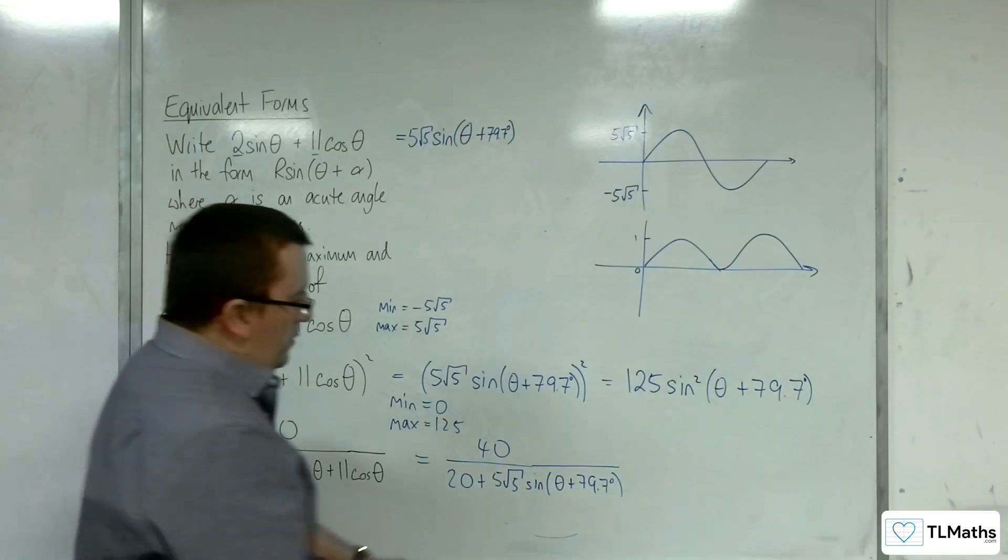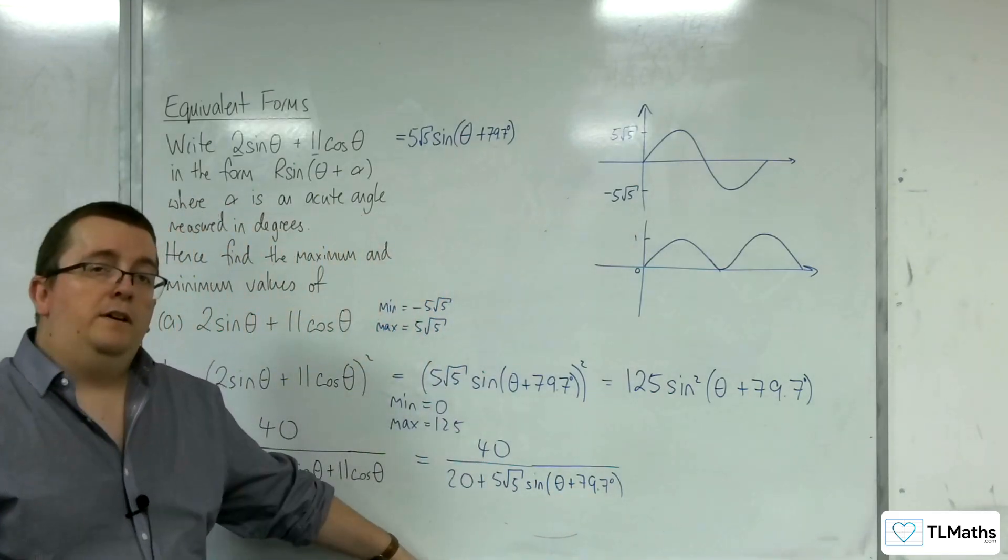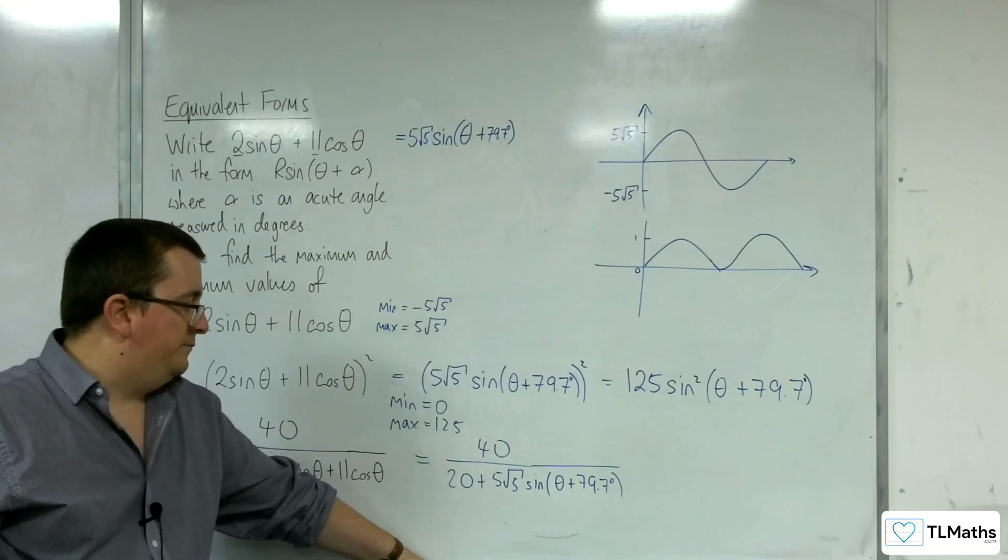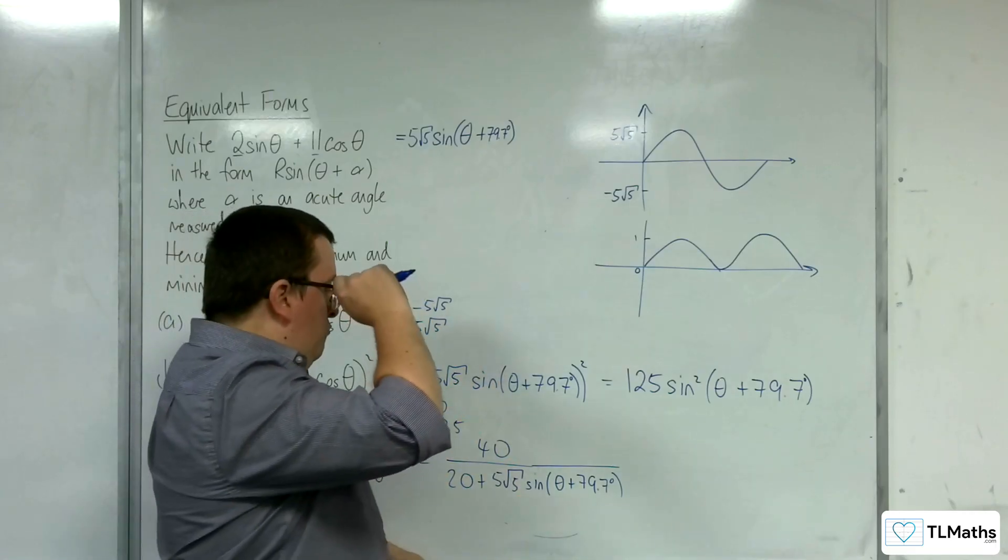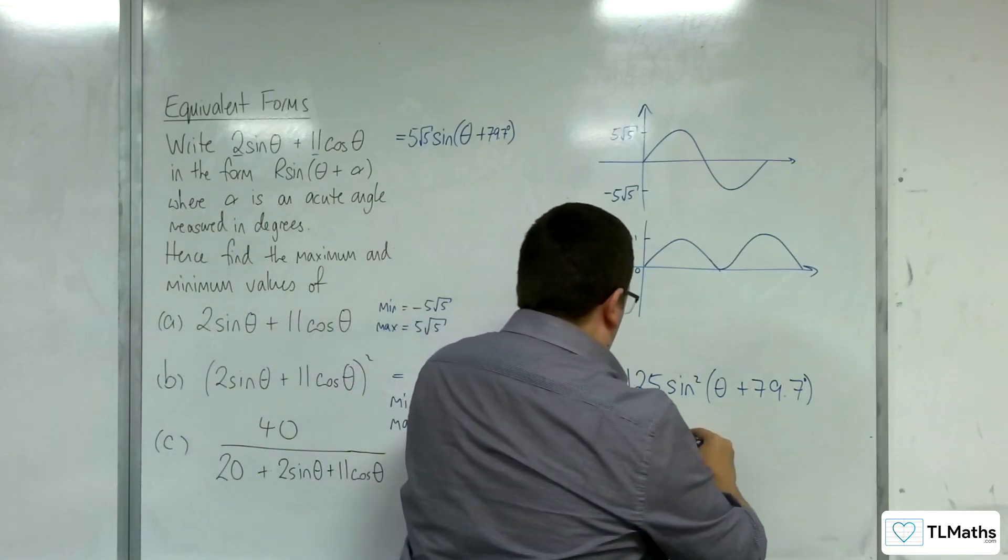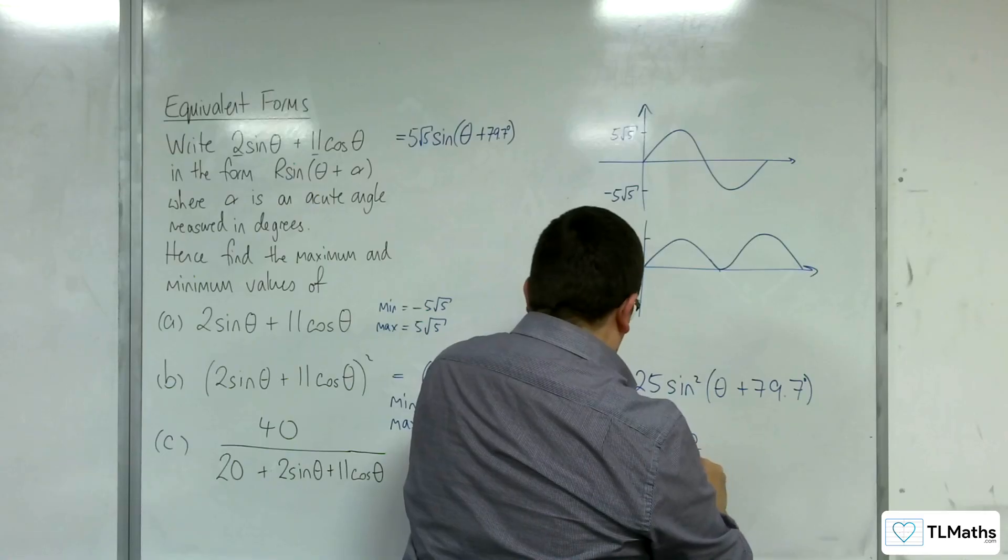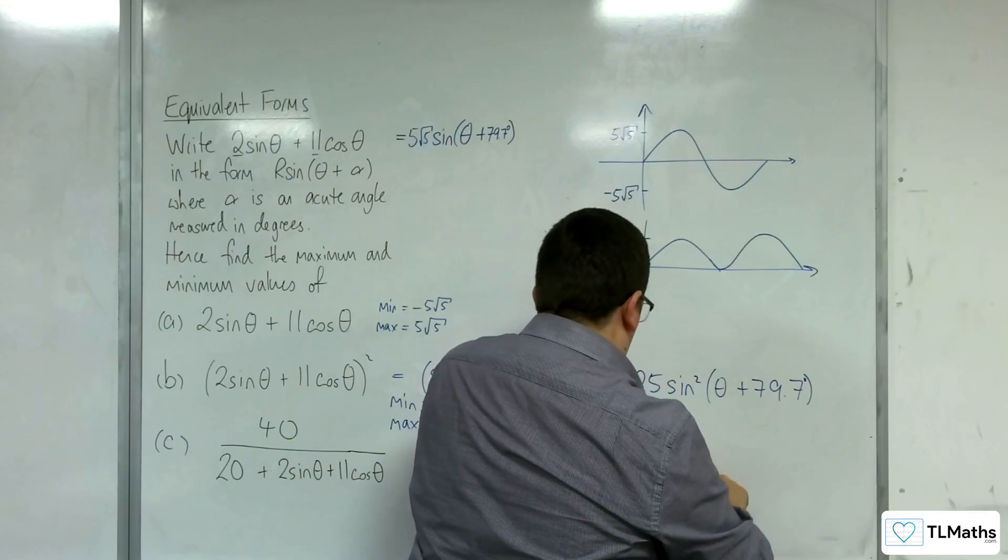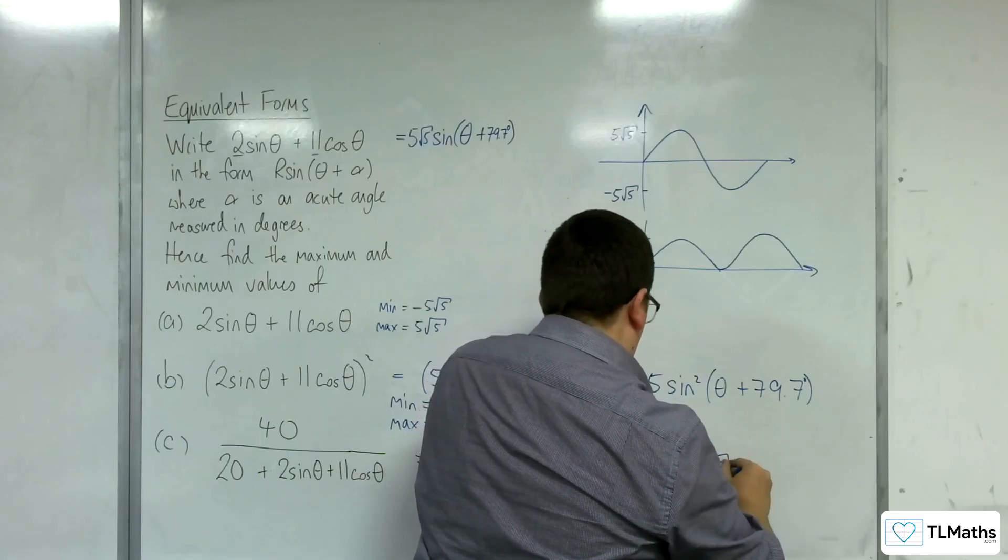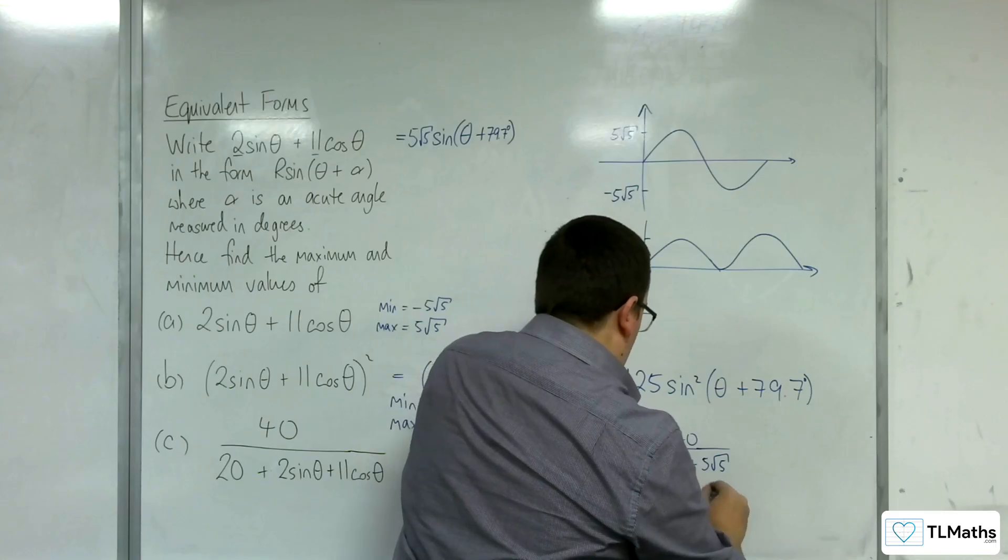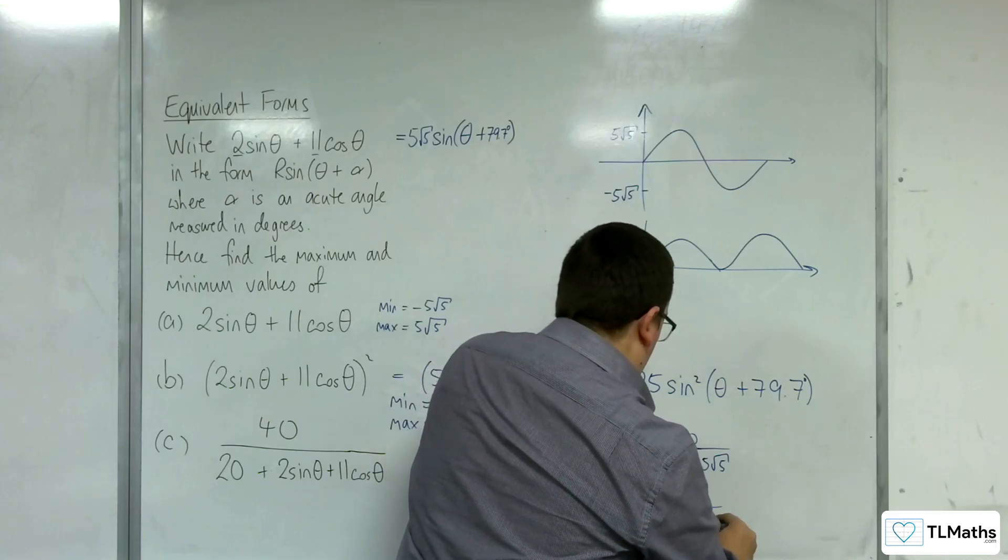We know that this part, the sine, goes between minus 1 and 1. So really, what we're investigating is 40 over 20 plus 5 root 5, and 40 over 20 minus 5 root 5.